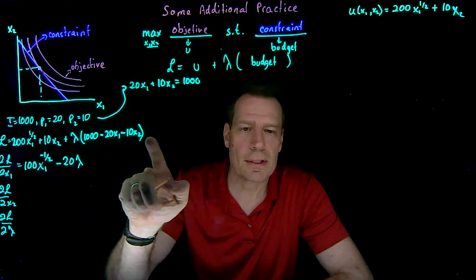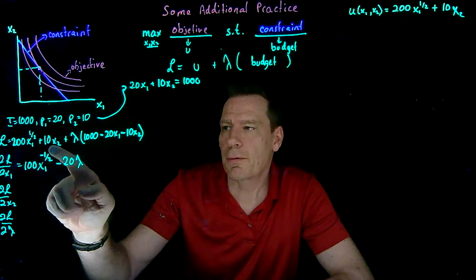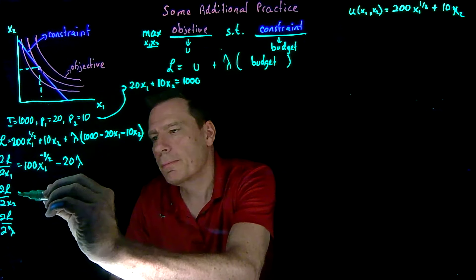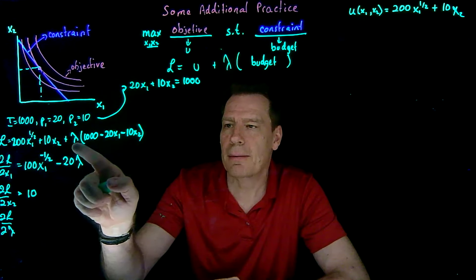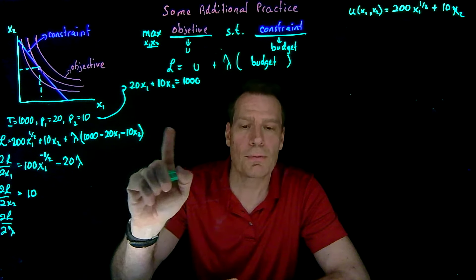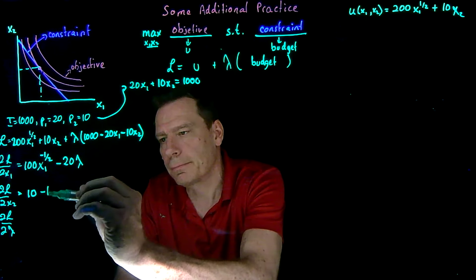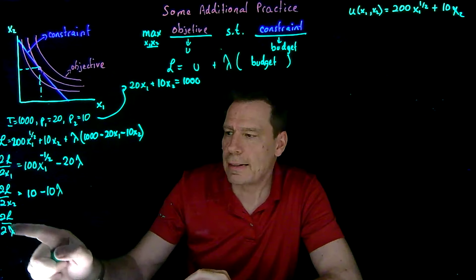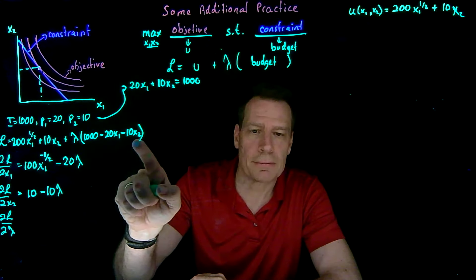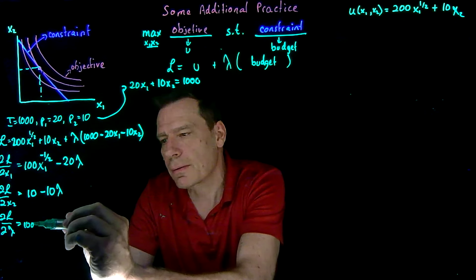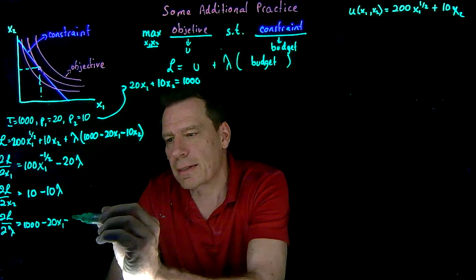Then we differentiate with respect to x2 — we just find where x2 appears. The derivative of 10x2 with respect to x2 is just 10. The derivative of minus 10 times lambda times x2 with respect to x2 is just minus 10 lambda. And when we differentiate with respect to lambda, we just get back the constraint: 1,000 minus 20x1 minus 10x2.